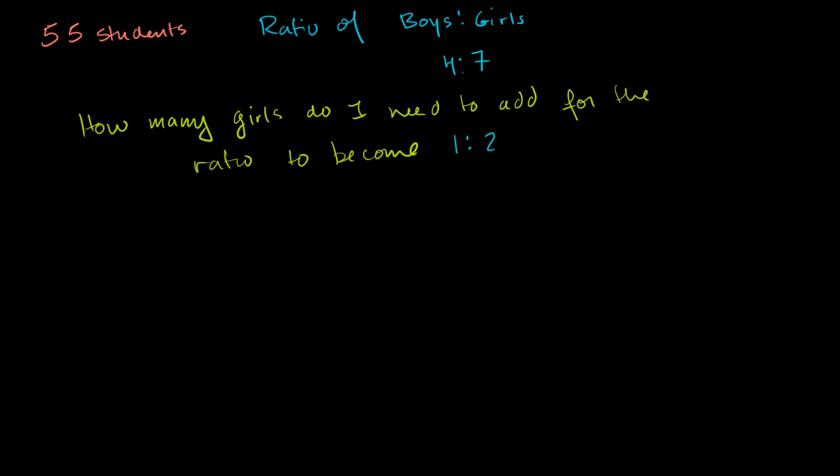So how can we do this? Well, just going back to the basic ratio video, the first thing we can do, we know the total number of students, and we know the ratio, so maybe it'll help us to figure out the number of boys and girls we have right now. So our current ratio is 4 to 7. So boys to girls right now is equal to 4 to 7.